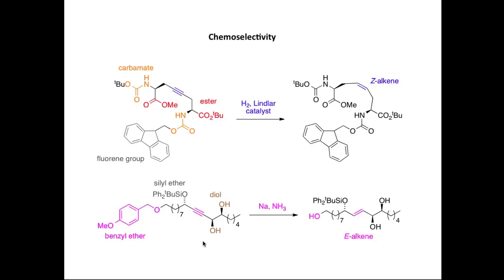And when we reduce this molecule with sodium and liquid ammonia, as predicted, the carbon-carbon triple bond is converted into an E-alkene. But you'll also note that the benzyl ether reacts. This bond is broken to give us a primary alcohol. You'll notice that the diol and the silyl ether remain unaffected under these conditions. So using sodium liquid ammonia, here we can do two things. We can reduce a carbon-carbon triple bond to an E-alkene, and also convert a benzyl ether into an alcohol.